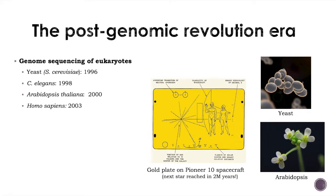What happened in the last three decades is a post-genomic revolution era. We first had the genome sequencing of several organisms, especially eukaryotes. Since 1996 and the sequencing of the yeast genome, many eukaryotes have been sequenced. We had first C. elegans, a small worm, in 1998, quickly followed by Arabidopsis thaliana, the first plant to be sequenced in 2000, and Homo sapiens, or the human, in 2003.